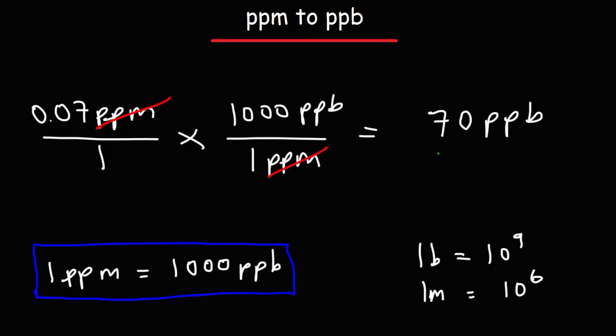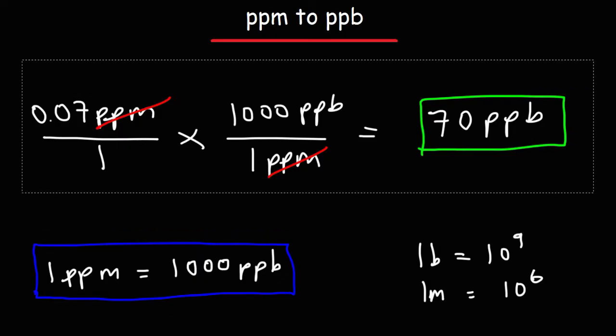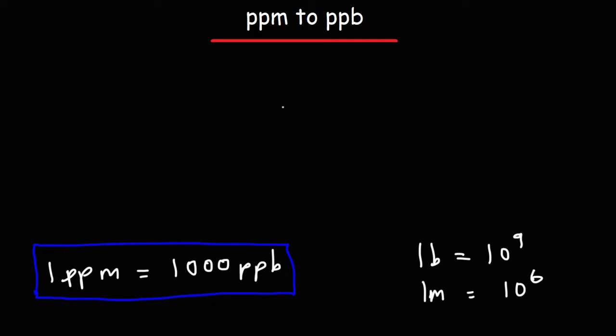So now you know how to convert from parts per million to parts per billion. Now let's work backwards. So let's say we have a solution that is 160 parts per billion. What is that concentration equal to in parts per million? Go ahead and work on that.